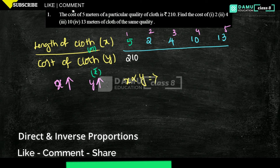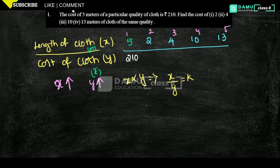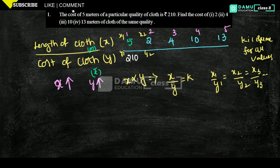Since X is directly proportional to Y, X by Y equals a constant K. Because K is the same for all values, we can write: X1 by Y1 equals X2 by Y2, which equals X3 by Y3, and so on. We will use this formula to find all the unknown cost values.